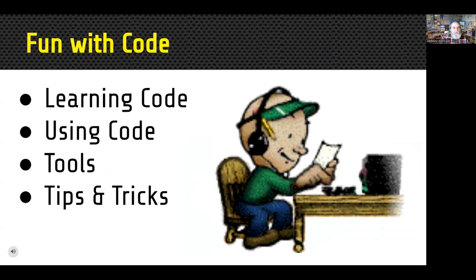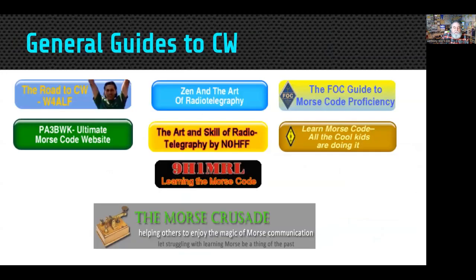Tonight we're going to talk about learning the code, using code, some tools you can use for a variety of things with code, and some tips and tricks. We're not going to teach you the code tonight — that's not the goal — but we're going to talk about how you can learn if you're new, and if you aren't new, how you can use it and become more effective. These are some general guides to CW — all these are links with a lot more information, some of them long books and essays on Morse code and operating.